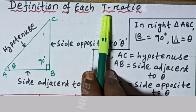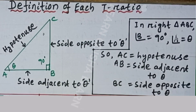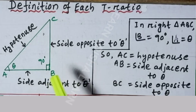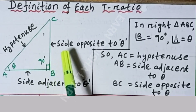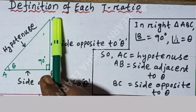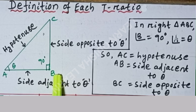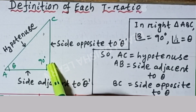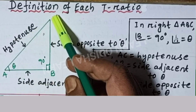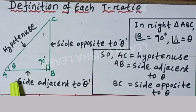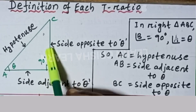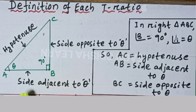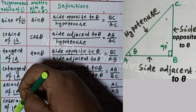Before defining each trigonometric ratio, we need the idea of a right-angle triangle. ABC is a right-angle triangle where angle B is 90 degrees. Let the measurement of angle A be theta. The side opposite to 90 degrees is AC, so AC is the hypotenuse. BC is the side opposite to angle theta and AB is the side adjacent to angle theta.